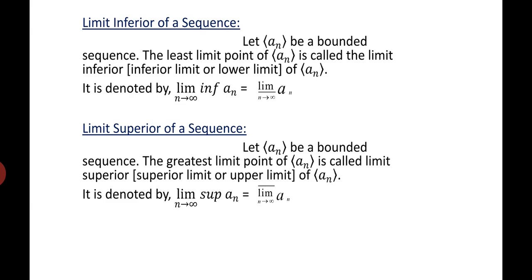Limit inferior of a sequence: Let a_n be a bounded sequence. The least limit point of a_n is called the limit inferior, or inferior limit, or lower limit of a_n. It is denoted by lim_{n→∞} inf(a_n), which is equal to lim_{n→∞} a_n.